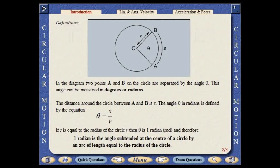In the diagram, two points on the circle are separated by the angle theta. This angle can be measured in either degrees or radians. The angle in radians subtended at the center by the two points is defined as the distance around the circle separating the points divided by the radius of the circle.